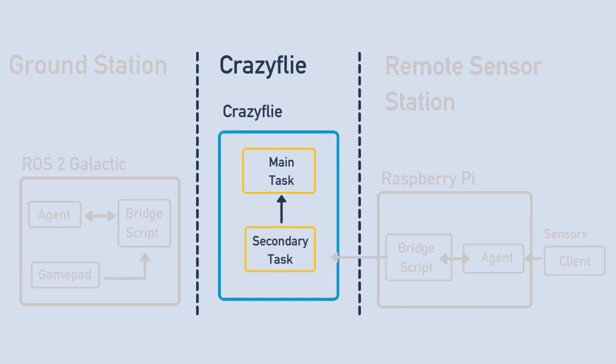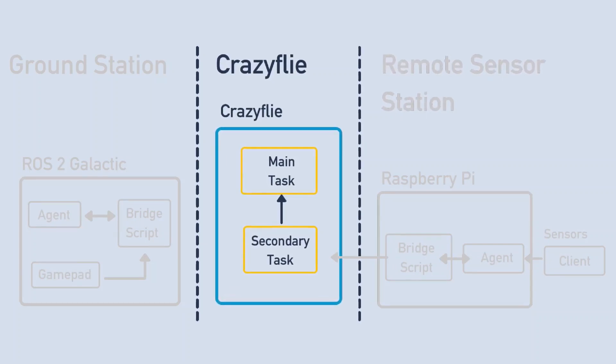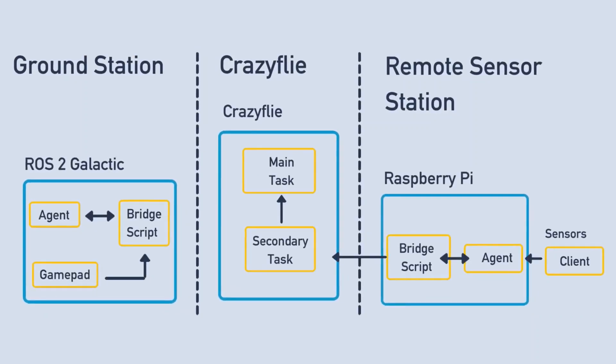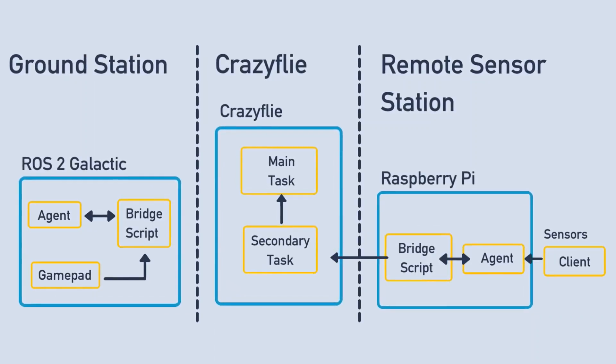Third, the CrazyFly will run two different MicroROS tasks in FreeRTOS. The CrazyFly starts by connecting to the Ground Control Station agent, where it will publish its geometry on the drone transform topic. After the main task is running, the secondary task will start, where it will try to read from the sensor topics from the remote sensor station. When sensor data arrives, it will be published to the Ground Control Station using the sensor topics.